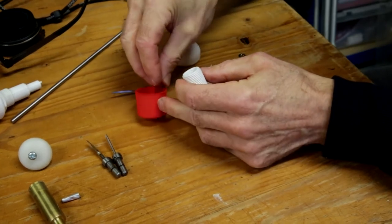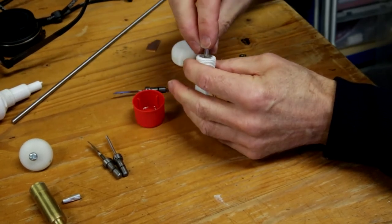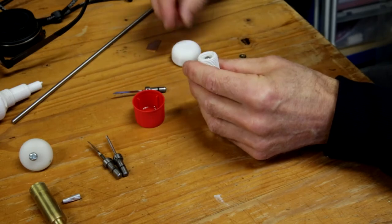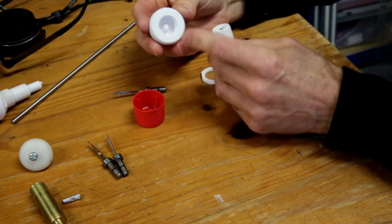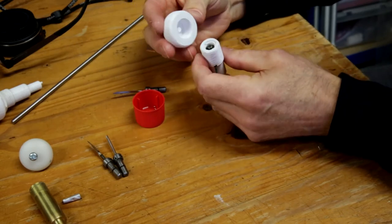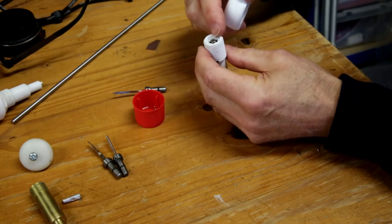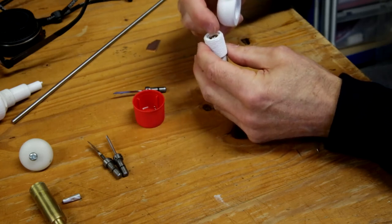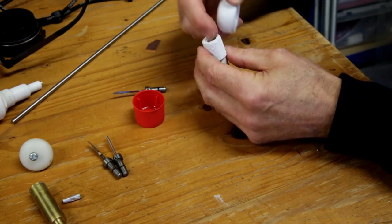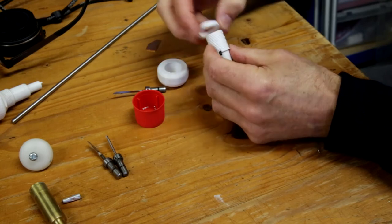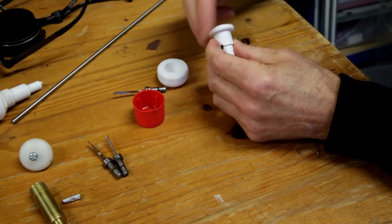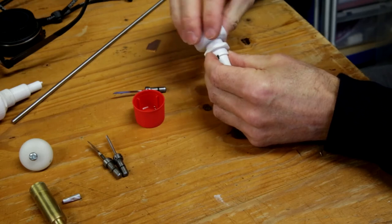Little bit of lubricant on the piston to smooth things along. The handle has a little peg in the middle which when it's screwed down will rest on the top of the piston, and that enables you to regulate the stroke length.